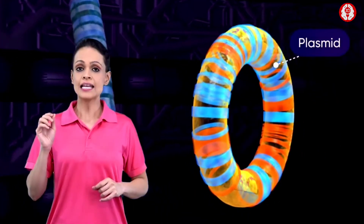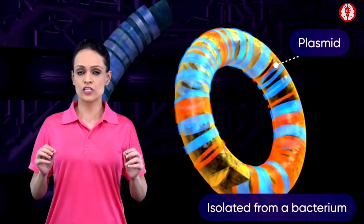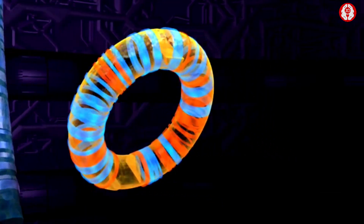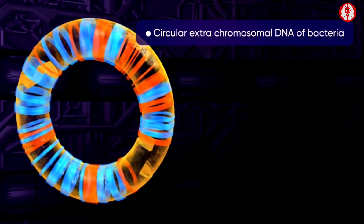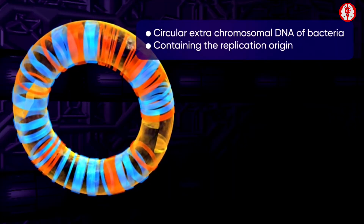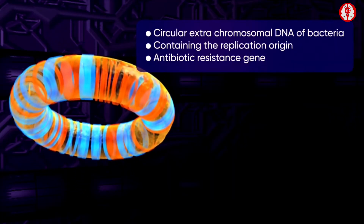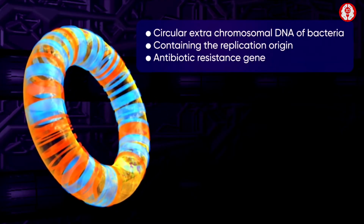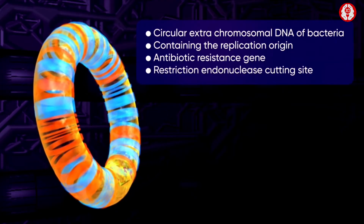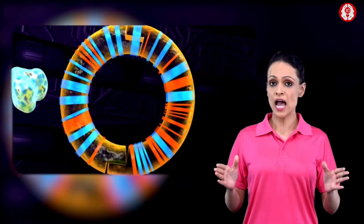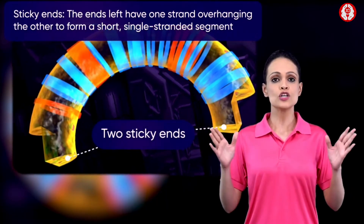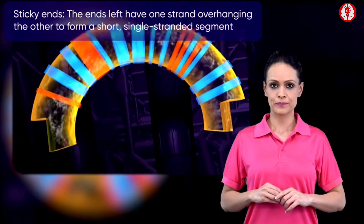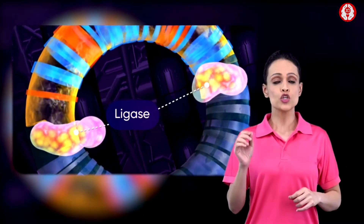This gives rise to a fragment containing the desired insulin-producing gene. The desired fragment is then collected and added to the plasmids previously isolated from the bacterium. The plasmids are the circular extra-chromosomal DNA of bacteria, containing a replication origin, antibiotic resistance genes, and a restriction endonuclease cutting site.